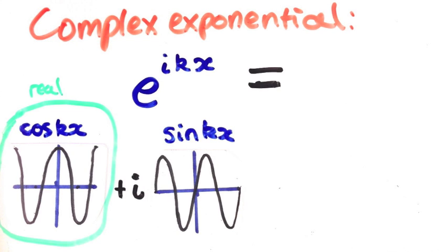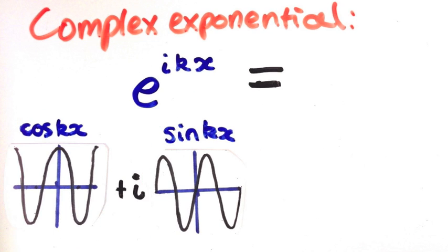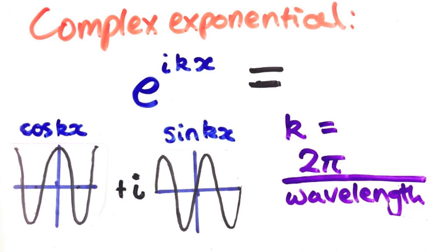The real part of this is a cos function, and the imaginary part is a sine function, and both bits have the same wavelength. How does that wavelength relate to k? Well, the wavelength is in fact 2π divided by k. We call k the wave number.